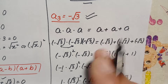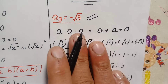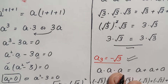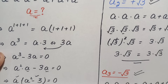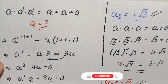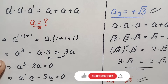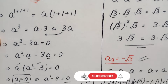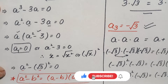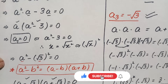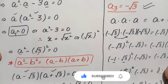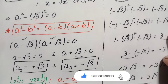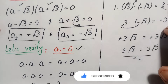So the three exact values of a in this interesting algebra problem are a₁ = 0, a₂ = √3, and a₃ = -√3. If you like this video, don't forget to subscribe to my YouTube channel for more interesting step-by-step math videos. Thanks for watching.